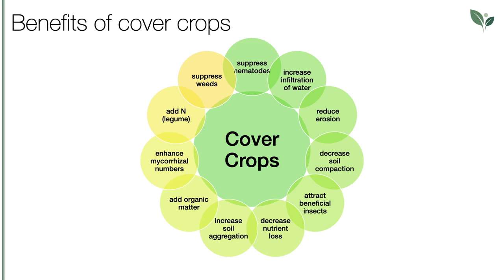Second, cover crops prevent soil erosion by keeping the soil covered. A mixture of oats and winter rye, for example, can be planted in fall. The oats will be killed by the cold weather, but the root system will still help to hold the soil in place. Winter rye will form small plants that will grow rapidly in early spring, which can then be mowed and tilled before planting the field in the following summer.